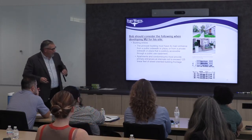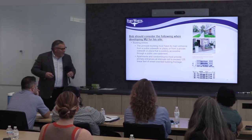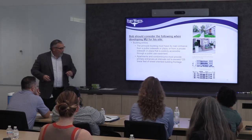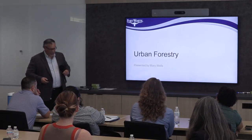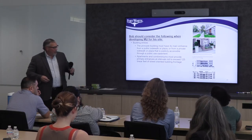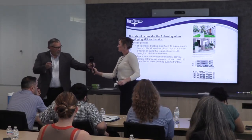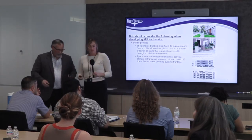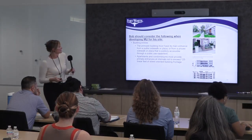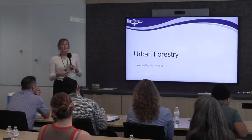Bob also has to consider building entries for apartments — they need to provide primary entrances along the roads or along the building frontage. All those things Bob needs to do prior to submitting his building permit. Bob also has urban forestry requirements, and Mary Wells is going to talk about urban forestry and what that means for Bob in his MU district.